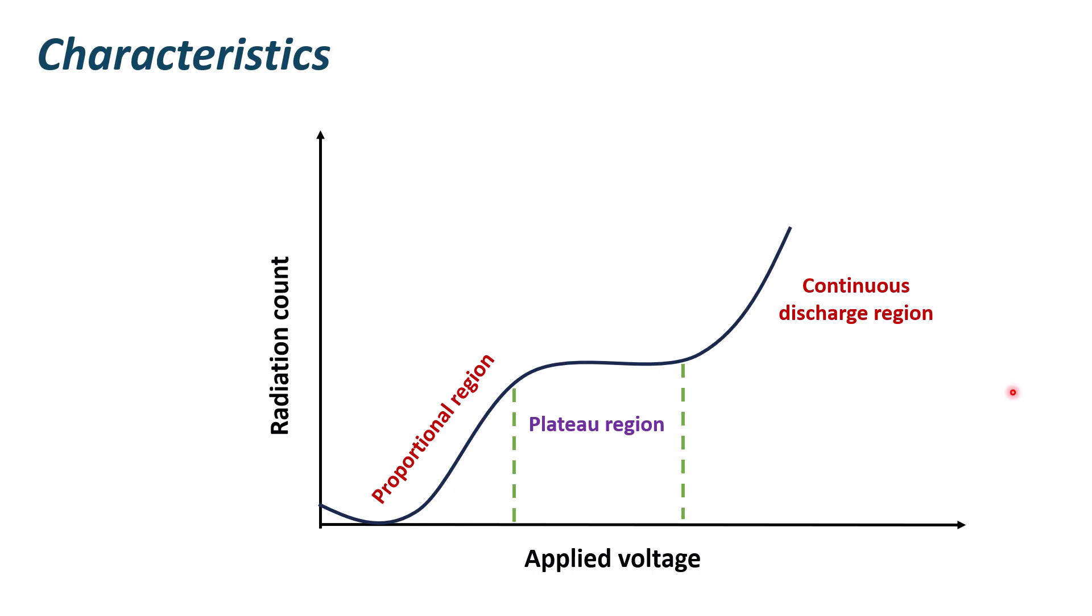Then, there will come a moment where the count rate stays constant over a specific area if the applied voltage is raised higher. This region is termed as Geiger or plateau region. The Geiger-Müller operation takes place in this region only.